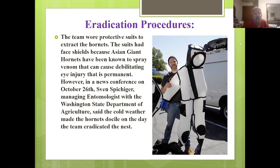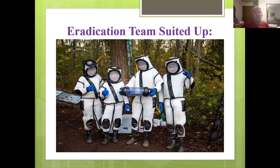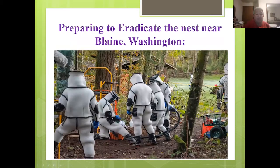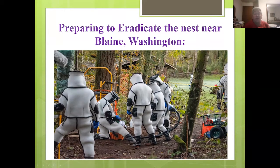However, at the news conference on October 26th, Sven Spichiger, the managing entomologist with the Washington State Department of Agriculture, said it was cold weather that day — the hornets were docile and they were able to eradicate the nest fairly easily without anybody getting hurt. The team used a vacuum unit to suck out the hornets, then pumped carbon dioxide into the tree cavity to stun and kill any they might have missed.